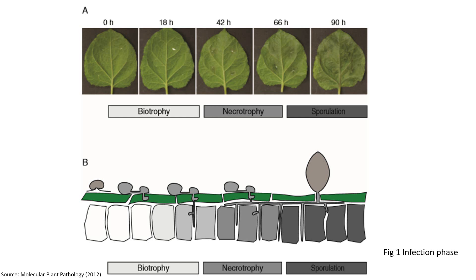By the 98th hour, sporulation occurs, which helps in continuing the cycle of infection. Similarly, Figure 2 shows the biotrophy, necrotrophy, and sporulation phases of the pathogen. During the early phase, indicated by colorless or white cells, the spore has landed on healthy tissue of the plant and is gradually starting to germinate. As it enters the necrotrophic phase, the spore has already penetrated into the host cell or tissue, started invading and colonizing, and by the sporulation phase, sporangia emerge to continue the infection cycle.